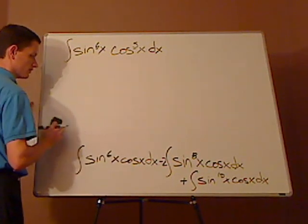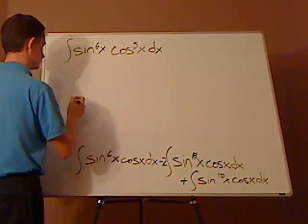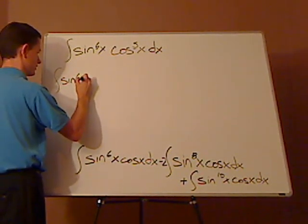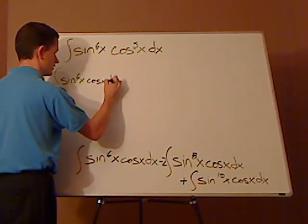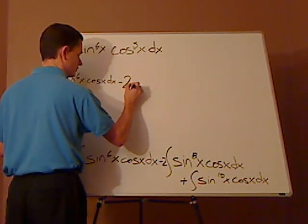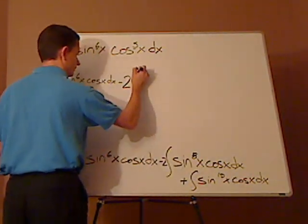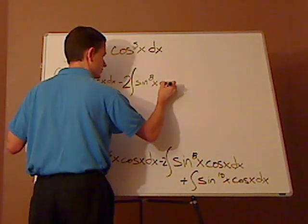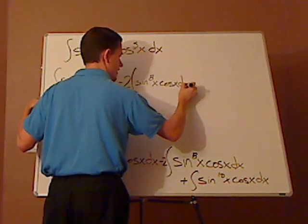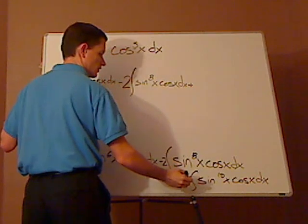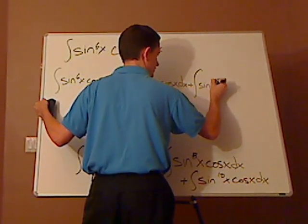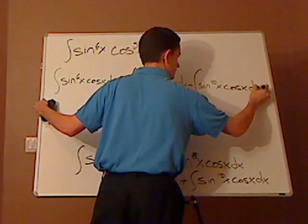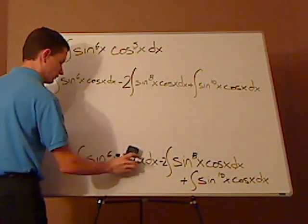And so let me rewrite this so you can see what's going on. So you have the integral of sine to the 6th x cosine x dx minus 2, this thing, the integral of sine to the 8th x cosine x dx, plus the integral of sine to the 10th x cosine x dx. I just rewrote it.